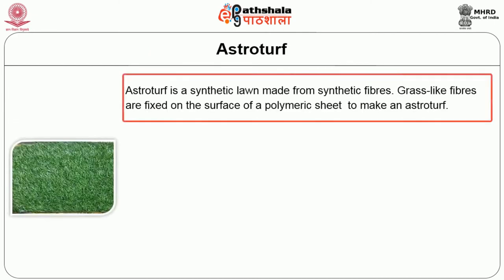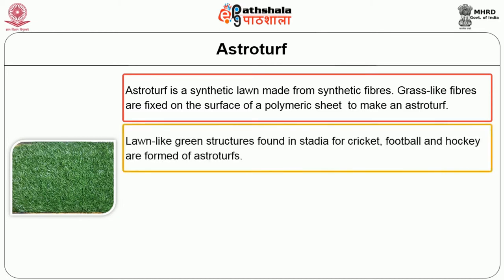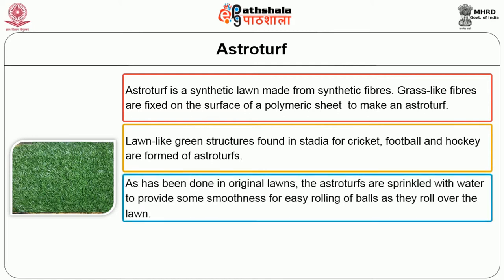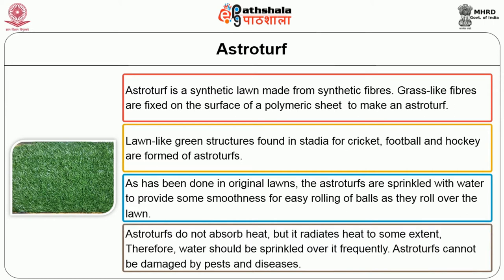Astroturf is a synthetic lawn made from synthetic fibers. Grass-like fibers are fixed on the surface of a polymeric sheet to make an astroturf. Lawn-like green structures found in stadia for cricket, football and hockey are formed from astroturfs. Astroturfs are sprinkled with water to provide smoothness for easy rolling of balls. Astroturfs do not absorb heat but radiate heat to some extent; therefore water should be sprinkled over them frequently. Astroturfs cannot be damaged by pests and diseases.